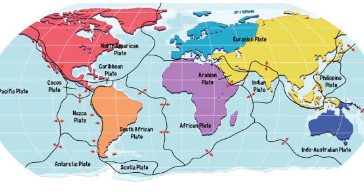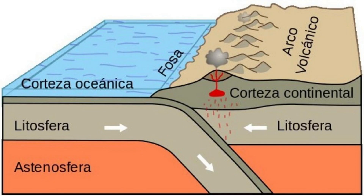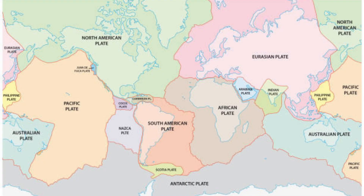Today we know that the Earth's crust, together with the upper part of the Earth's mantle — the lithosphere — is composed of several plates. These plates lie on top of the softer asthenosphere and form the base of the continents and oceans.